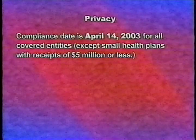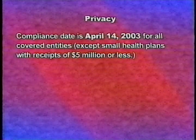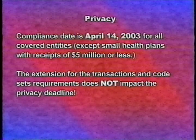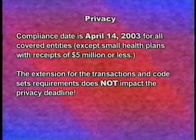Let's move on to compliance dates for other key components of administrative simplification. The final rule for HIPAA privacy was published in December 2000, with final modifications published August 14, 2002. It set a compliance date of April 14, 2003 for all covered entities except small health plans. Remember, even if you got the one-year extension for electronic transactions and code sets, you still must meet all deadlines for compliance with the privacy provisions and any other HIPAA administrative simplification provisions.